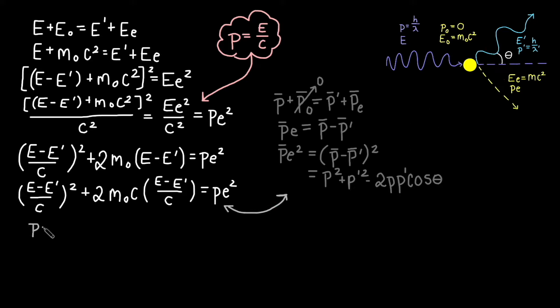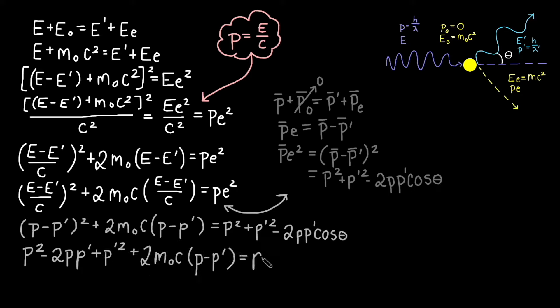We can combine our two equations. We now get an equation in terms of momentum. If we FOIL out the first term, we will have a p squared and a p prime squared on both sides of the equation, so we can cross these out. All the terms left have a coefficient of two, so we can also divide the entire equation by two.